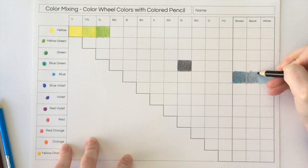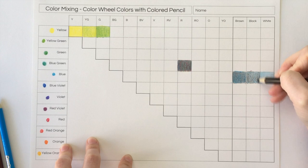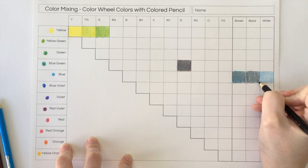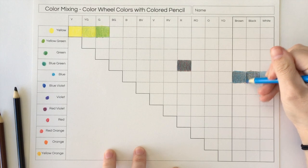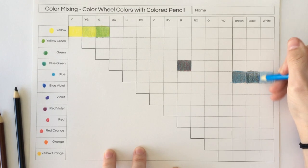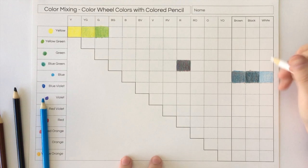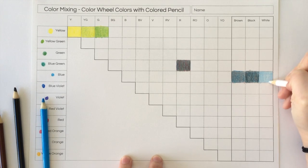When you add black, you want to make sure that you don't add too much, and then the last one is white. All right, and that's how you will fill in the rest of your chart.